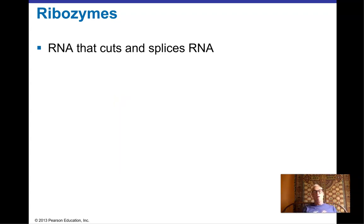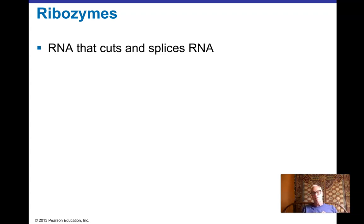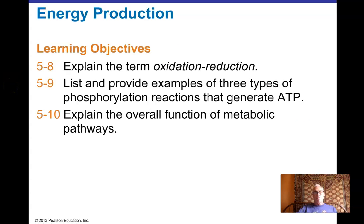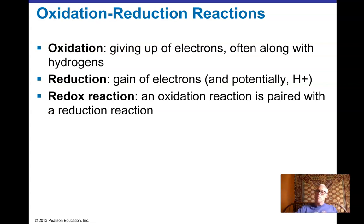Briefly: for a long time all known enzymes were proteins. More recently it was discovered that some RNA molecules have enzymatic activity — these are called ribozymes. They can cut and assemble pieces of RNA. In eukaryotes, when RNAs are transcribed from genes, ribozymes are sometimes involved in cutting out pieces and splicing the ends together to produce the final mRNA used to translate a protein.